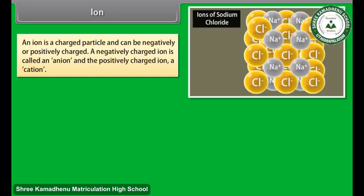Ion: An ion is a charged particle and can be negatively or positively charged. A negatively charged ion is called an anion and the positively charged ion is called a cation.